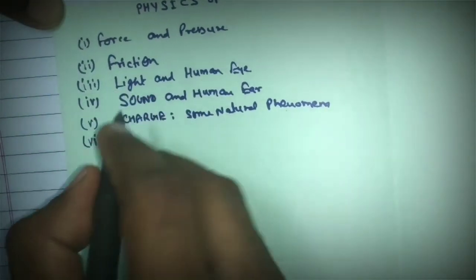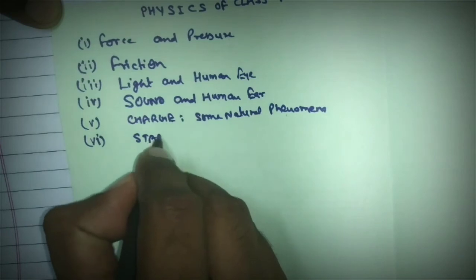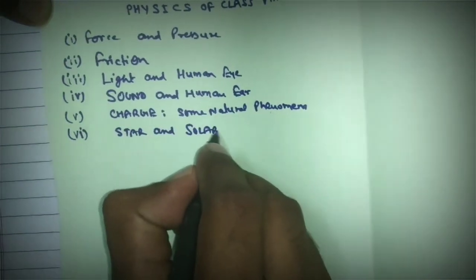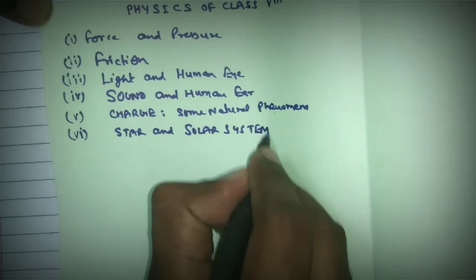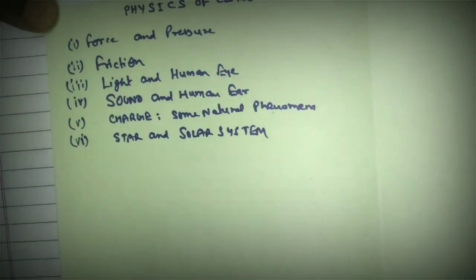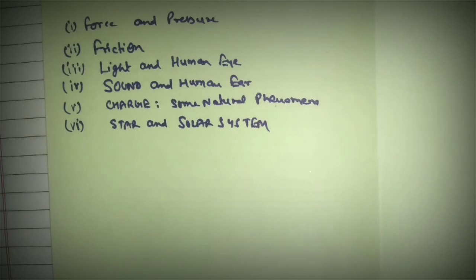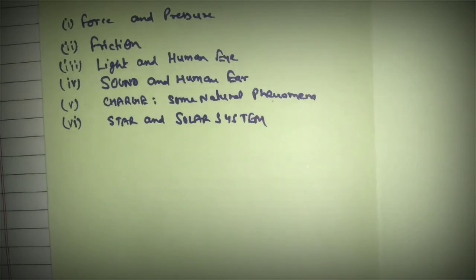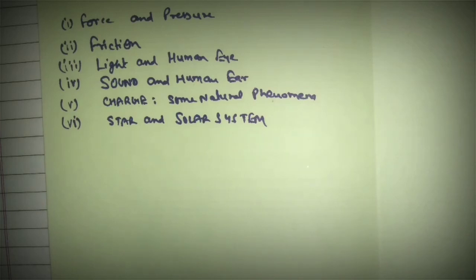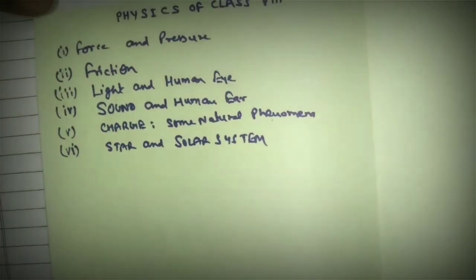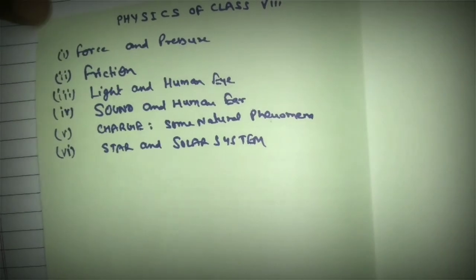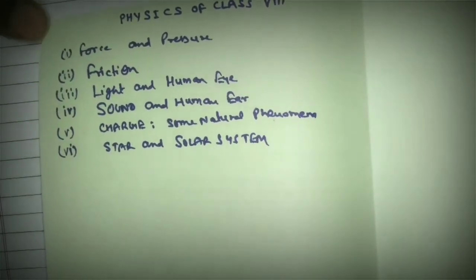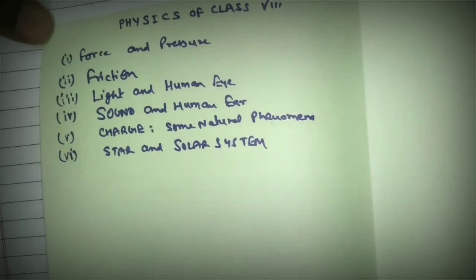The last chapter of physics is stars and solar system. In this chapter we introduce the basics of stars and how they form, and we discuss the different heavenly bodies present in the solar system. The most interesting chapter of class 8 is stars and solar system.